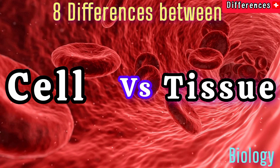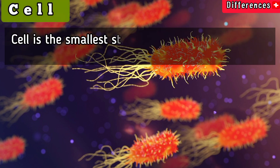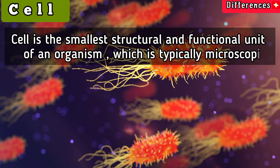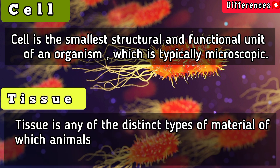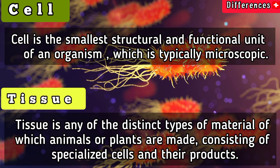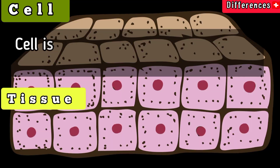In this video we will explain the difference between cell versus tissue. A cell is the smallest structural and functional unit of an organism, which is typically microscopic. A tissue is any of the distinct types of material of which animals or plants are made, consisting of specialized cells and their products.